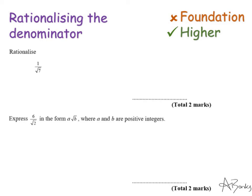Hi everyone, thanks for watching my online lesson on rationalising the denominator. This topic involves calculating with surds, and before you attempt to rationalise the denominator, you need to be able to multiply surds, and for some more complicated examples, you need to expand double brackets with surds. But for now, let's look at some simpler examples.